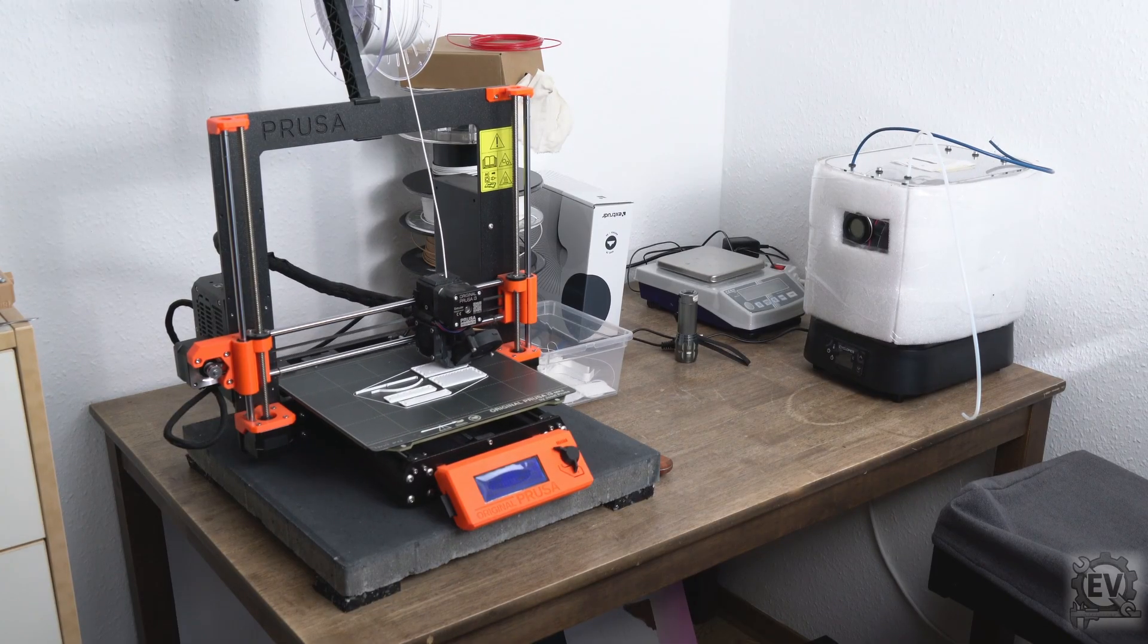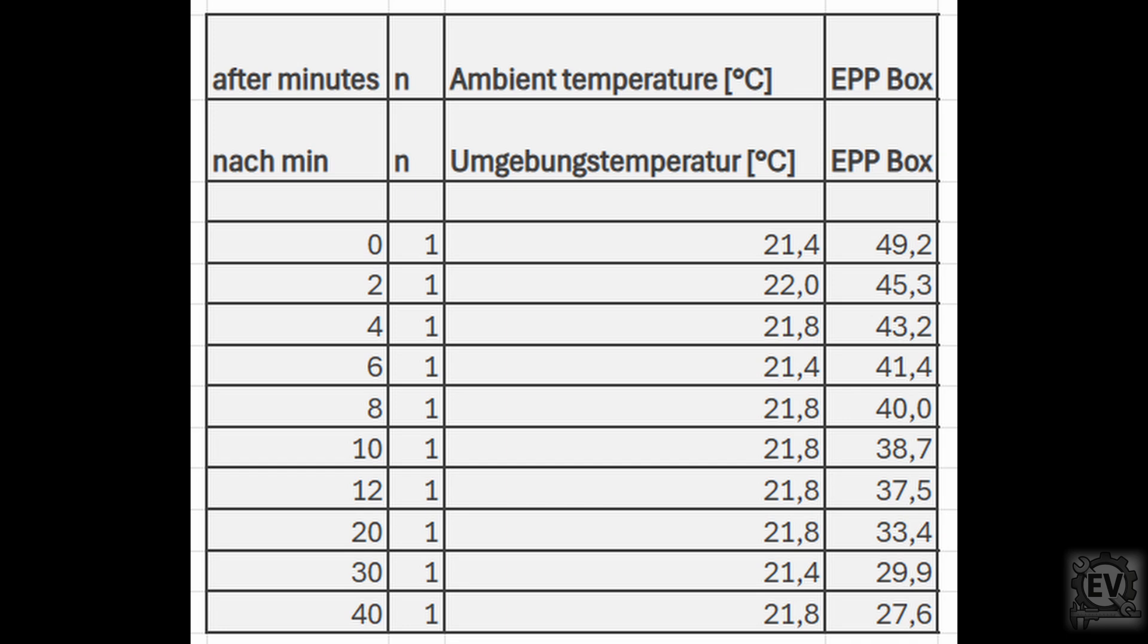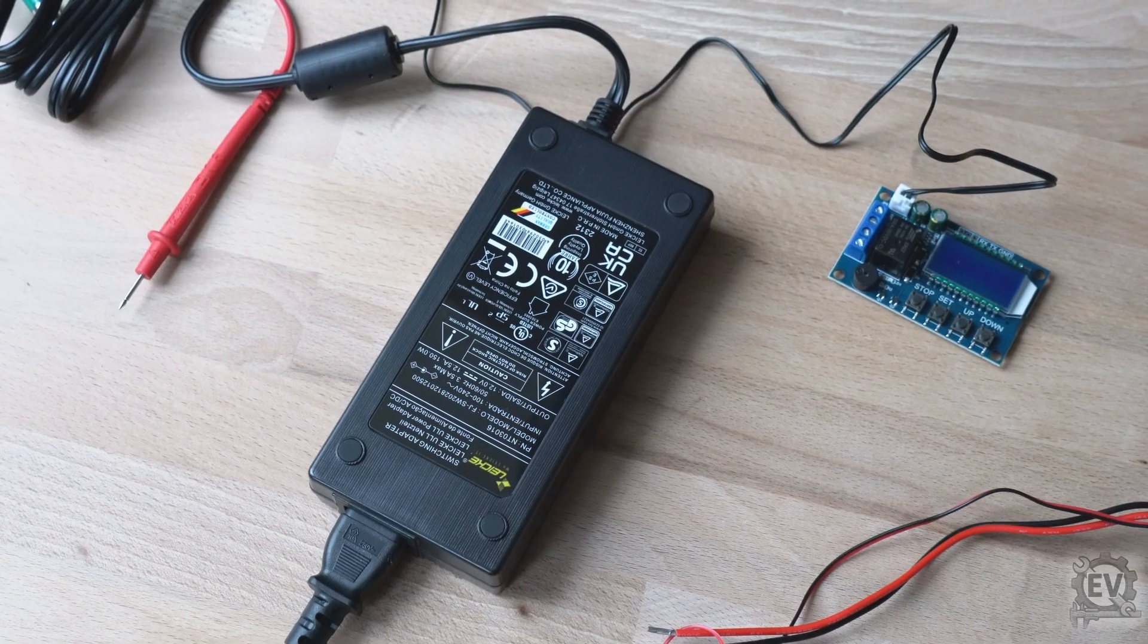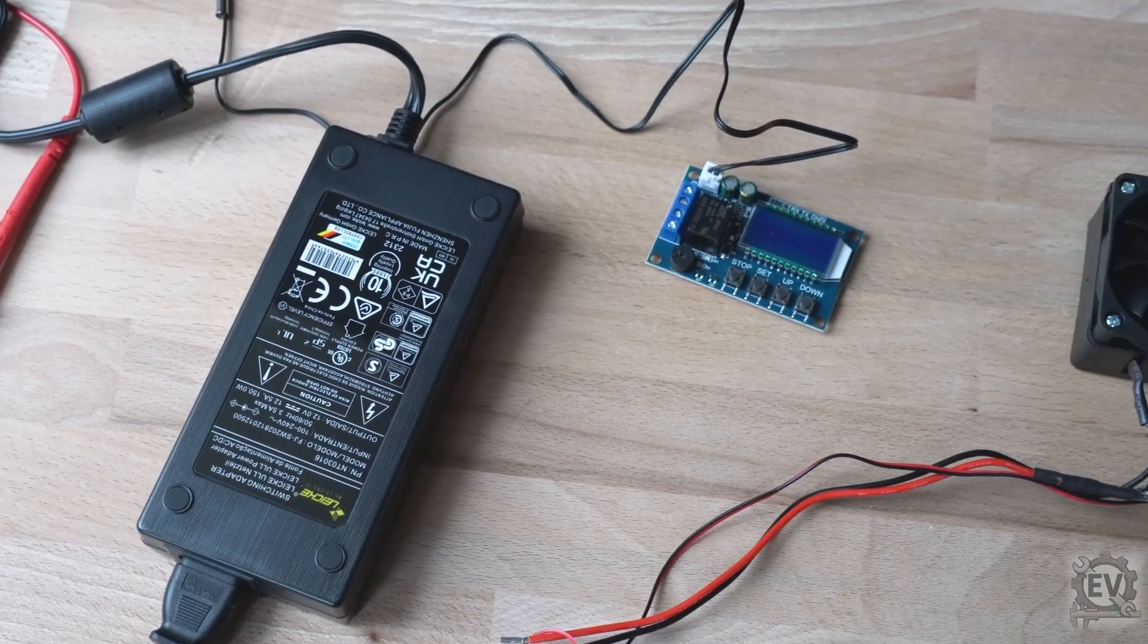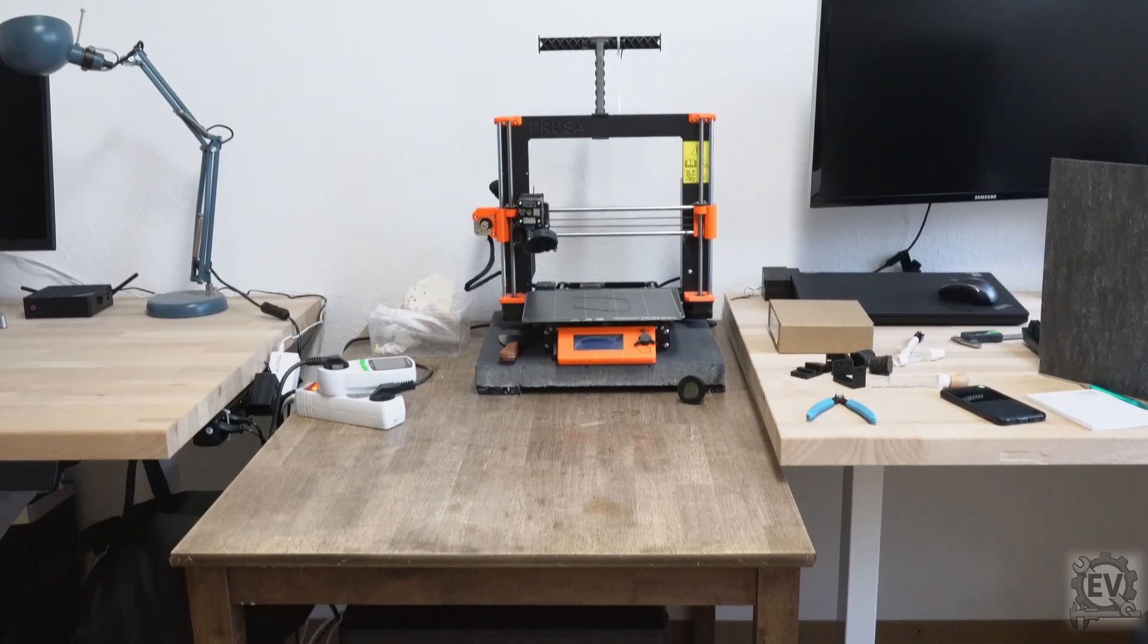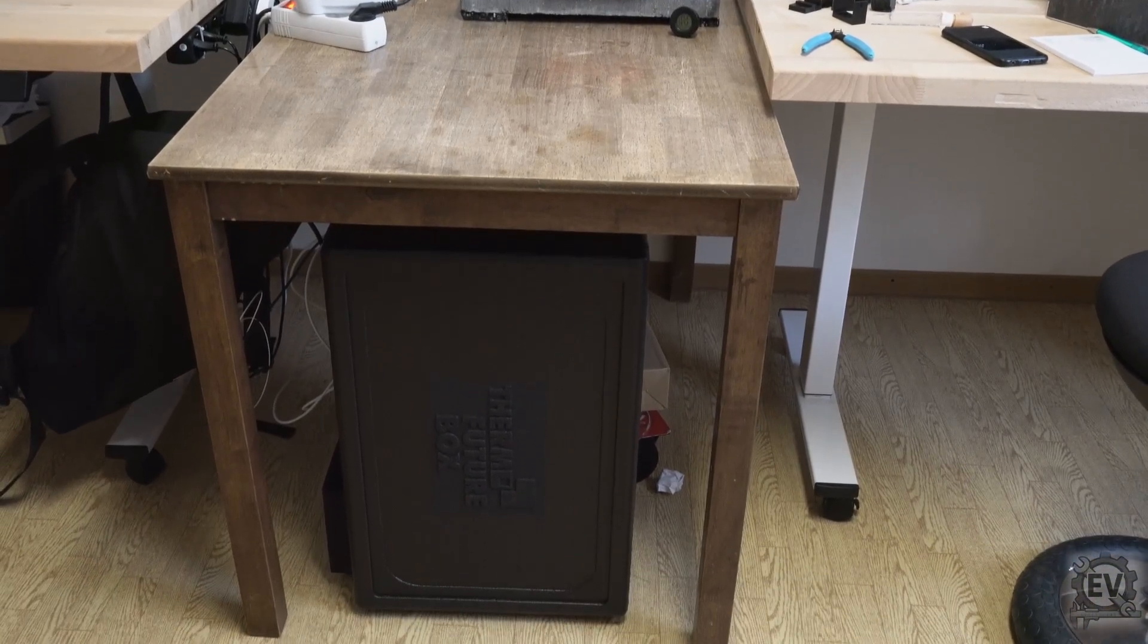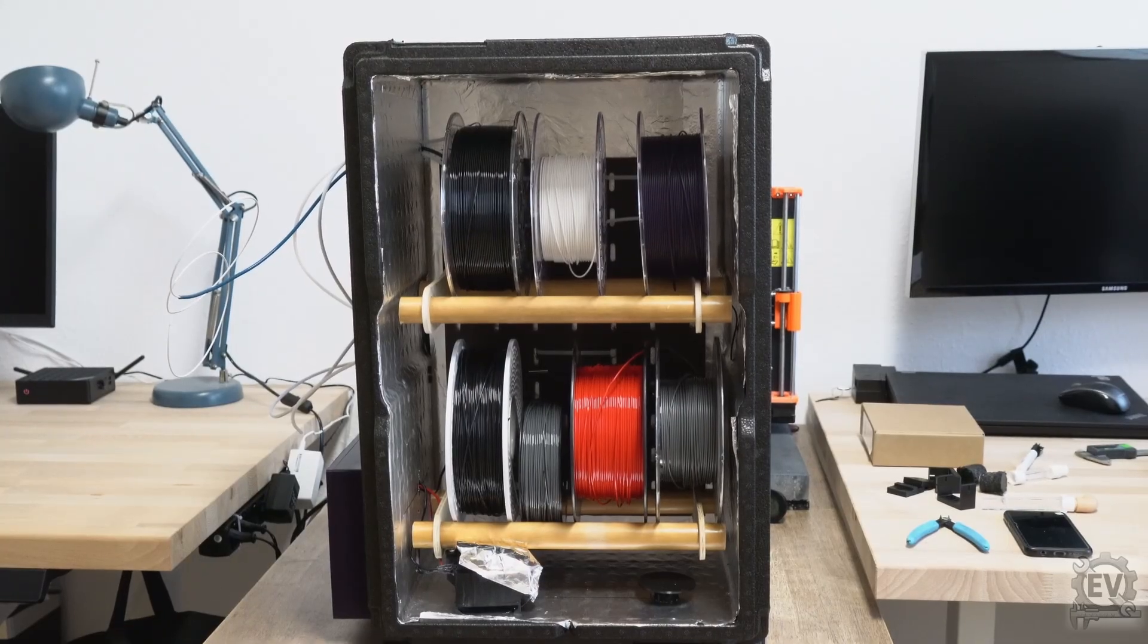After more than two months of regular use we have gained some insights. I have found that if you have dried the filament once and only heat the drying box for one hour every two days, the humidity level is maintained. This means that there is little exchange with more humid outside air when the switch is off.